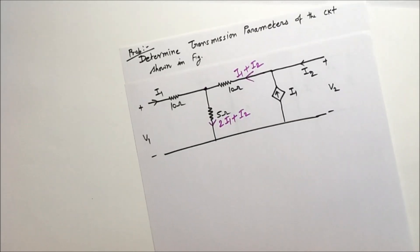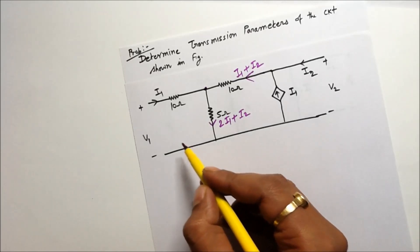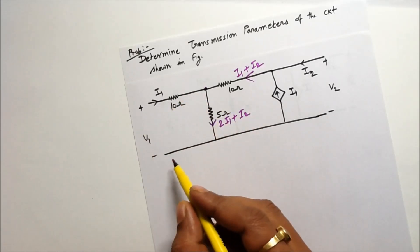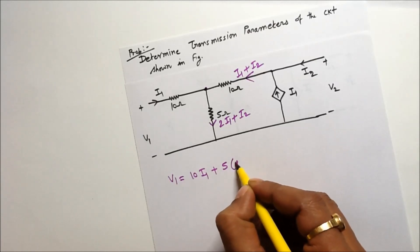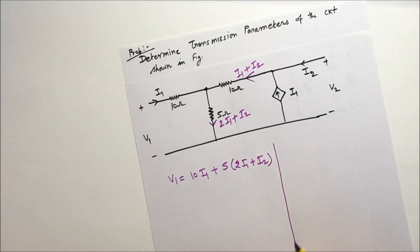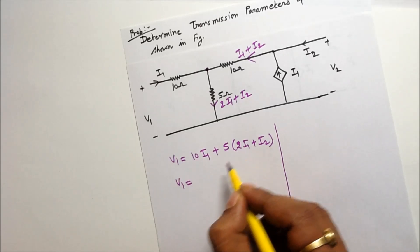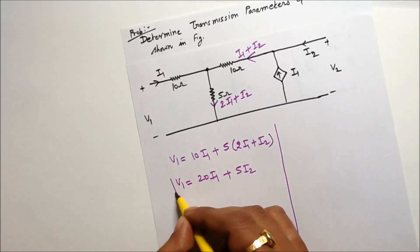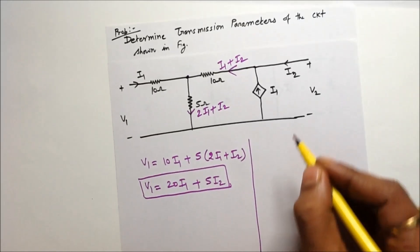Now we have to find out two equations. I can find out the first equation by using KVL in this loop. Applying KVL: V1 equals 10I1 plus 5 into (2I1 plus I2). Solving this equation: V1 equals 10I1 plus 10I1, which gives V1 equals 20I1 plus 5I2. This is the first equation obtained from this circuit.